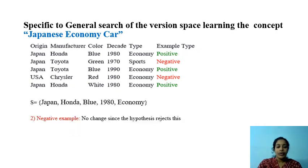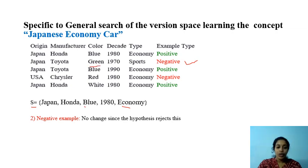Now with the current hypothesis S, we got a negative instance. We need to check whether our hypothesis rejects this negative instance. Our hypothesis clearly rejects it because this negative instance has green color, but our hypothesis accepts only blue. So no change is required in this hypothesis.